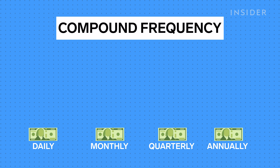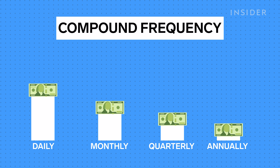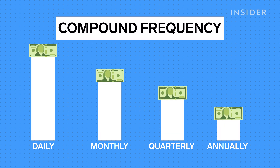Interest can be compounded daily, monthly, quarterly, or annually. The more often interest is compounded, the faster the balance grows. So if you're saving money, you hope that interest is compounded as often as possible. If you owe money, you hope that interest is compounded as infrequently as possible. So you could have two savings accounts that pay the same interest rate, but one compounds interest daily and the other compounds interest quarterly. Ultimately, the account that compounds daily will earn you more money.